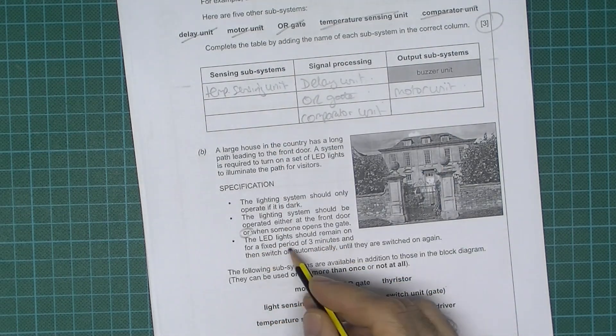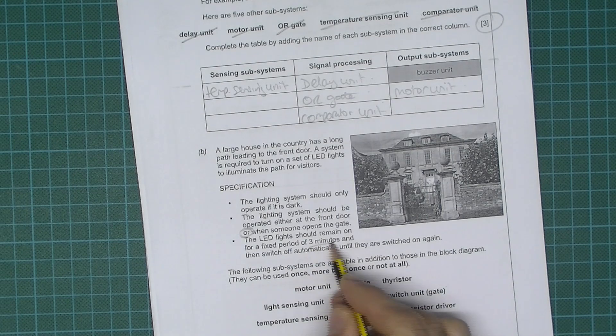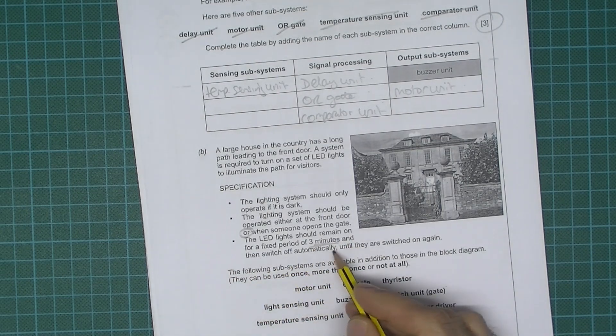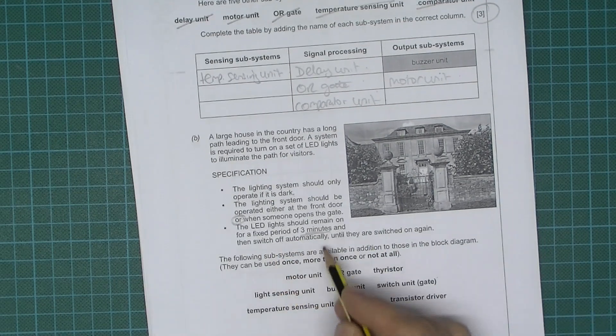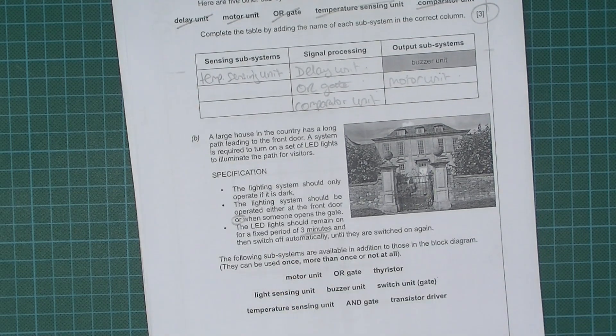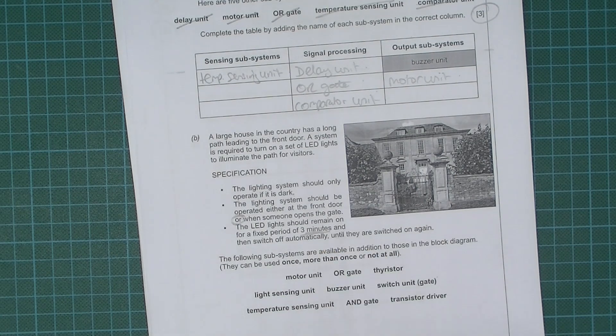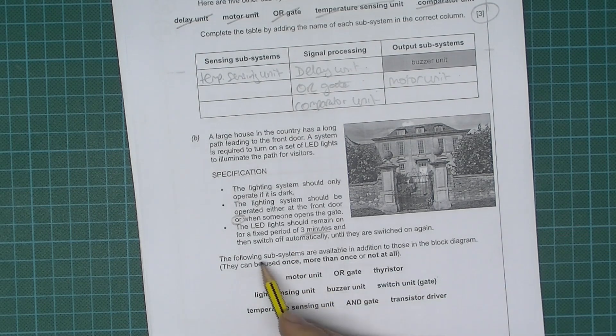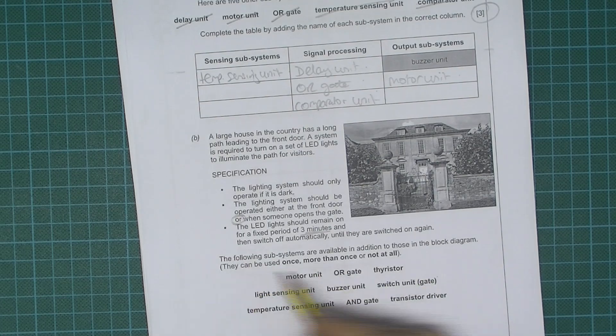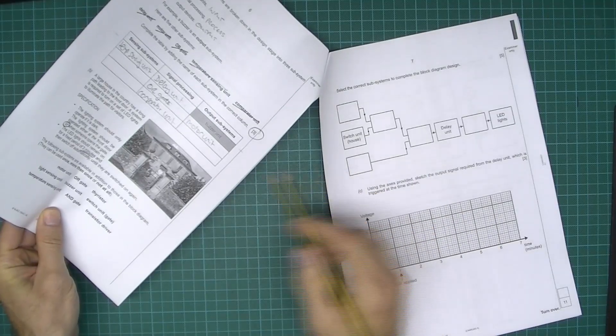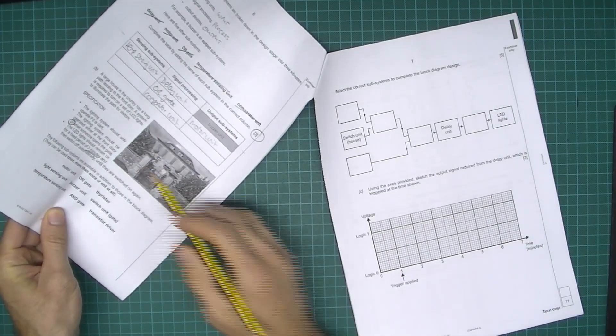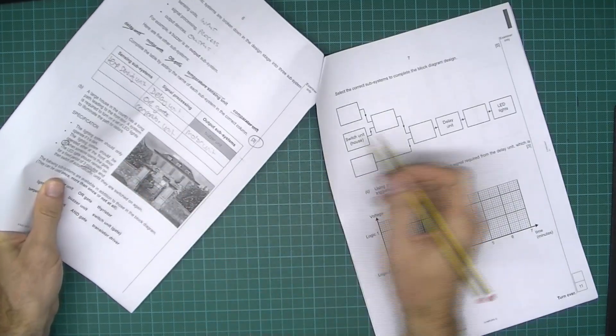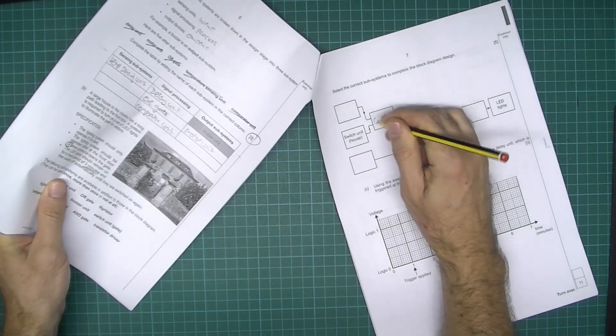The LED lights should remain on for a fixed period of three minutes. Sounds like there's a delay unit there and then switch off automatically until they're switched on again. And because they switch off automatically, I don't think there's going to be a latch. Okay, remember when we have a latch, a latch will be turning on and it stays on, whereas a delay might go on for a certain period of time. Okay, so we can use any of these once, more than once, not at all, up to us. Okay, two things that can get the light system activated and we said there's an OR, so we will have an OR gate.